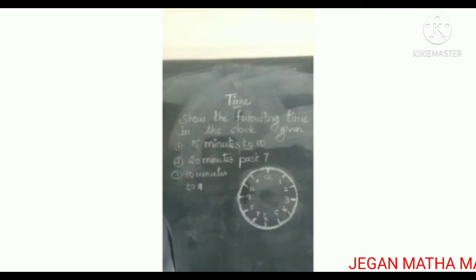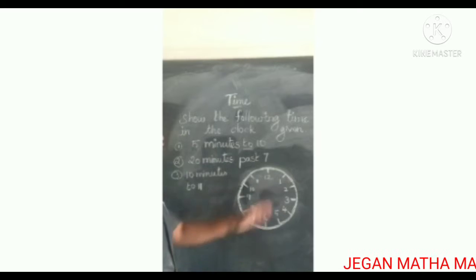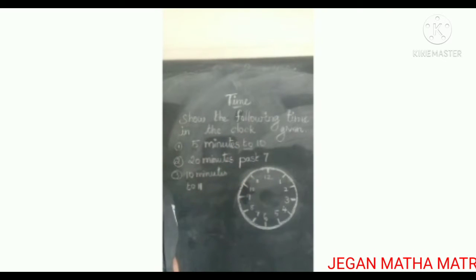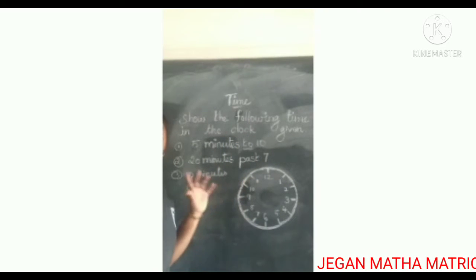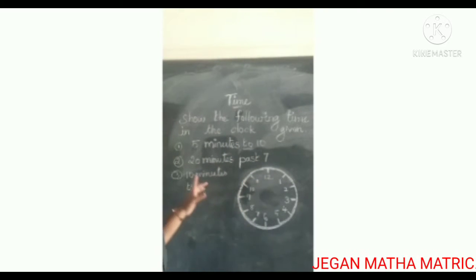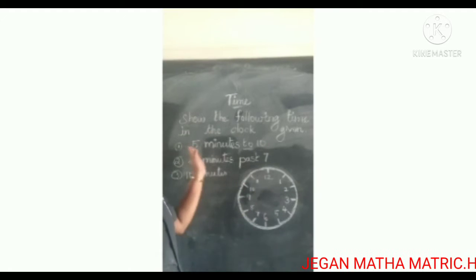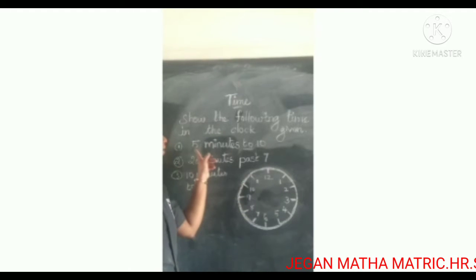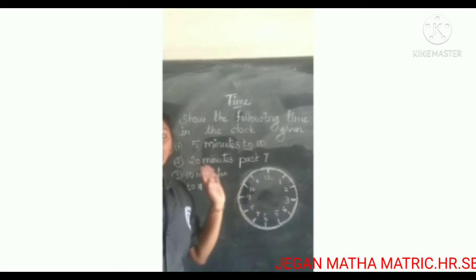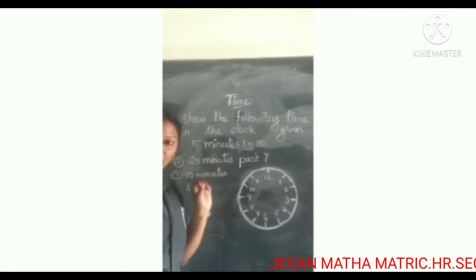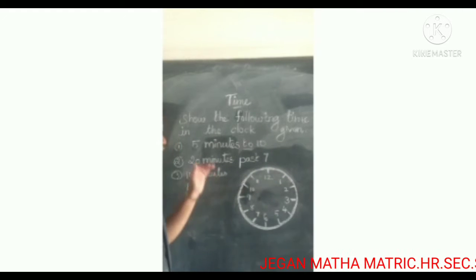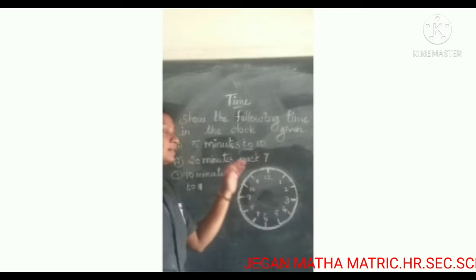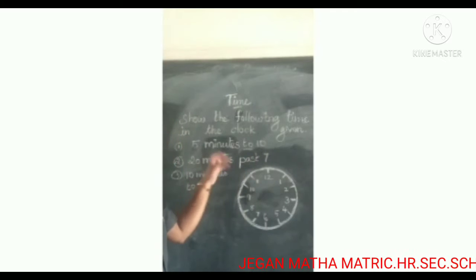You see the first sum: show the following time in the clock given. You want to show the time in the clock. The time is given. First one: five minutes to ten. The time is not ten — it is five minutes to ten.